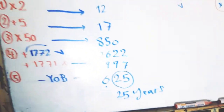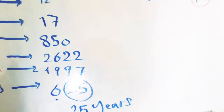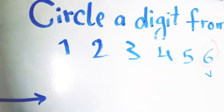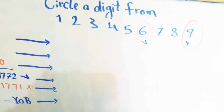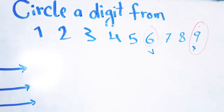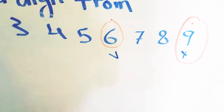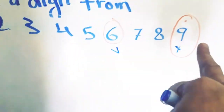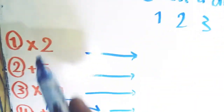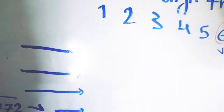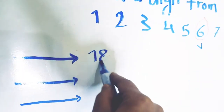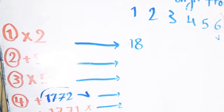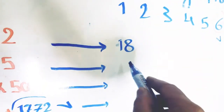Let's take another example. You select any digit from 1 to 9. Suppose that you have selected 9. We will apply the same steps. The first step: multiply this digit by 2, so multiply 9 by 2 to get 18. The second step: add 5 to this result. When we add 5 to 18, we get 23.